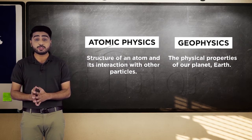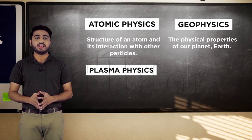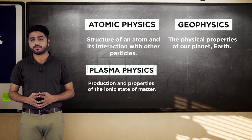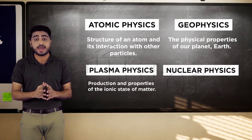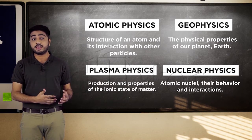While plasma, the fourth state of matter, is looked at in detail in plasma physics. This is basically the study of production and properties of the ionic state of matter. Nuclear physics is a very interesting and vast field and deals with the atomic nuclei, their behavior and interactions.